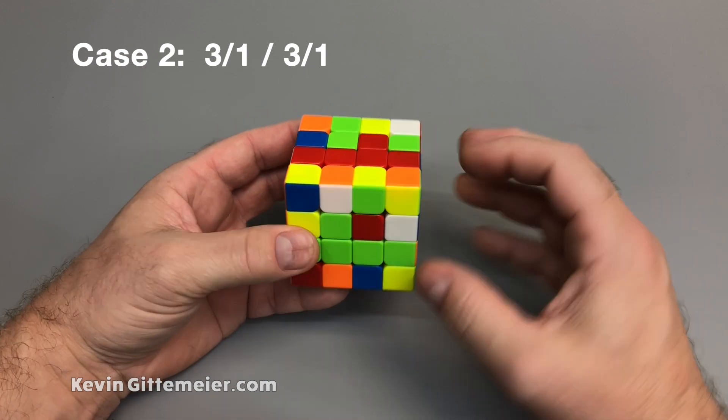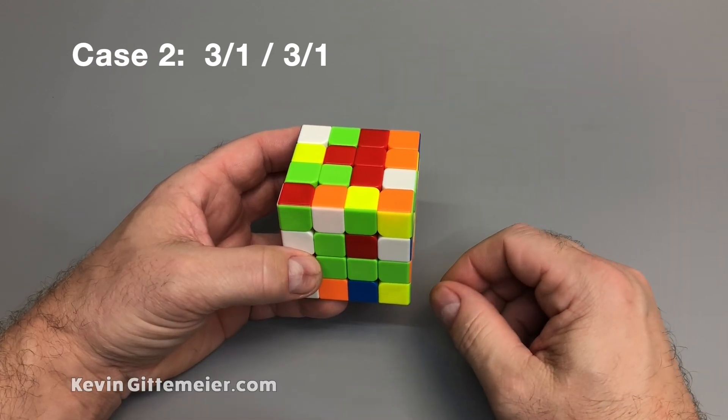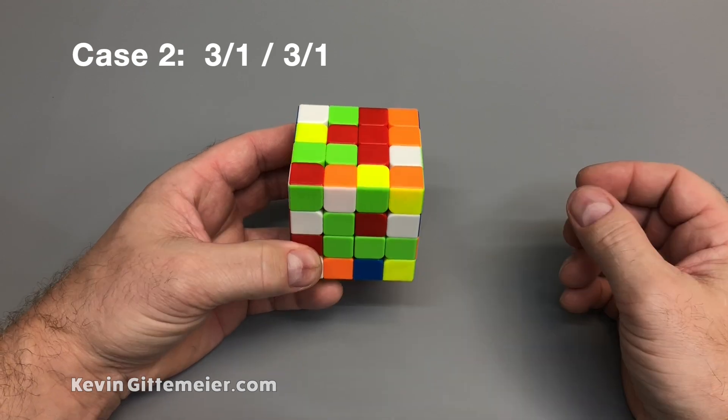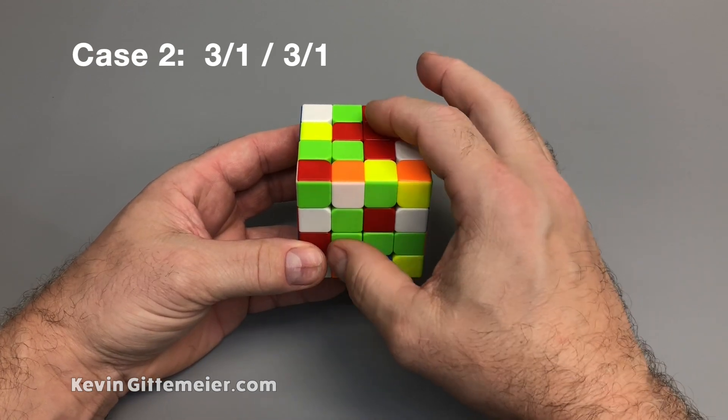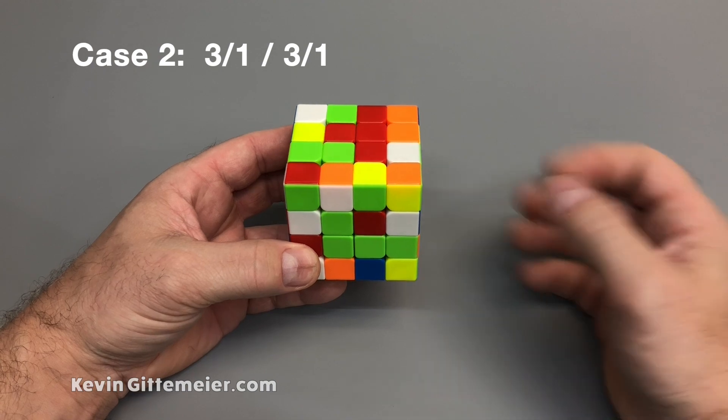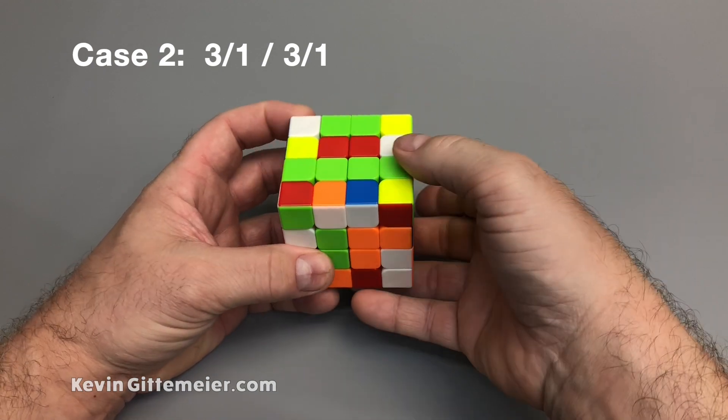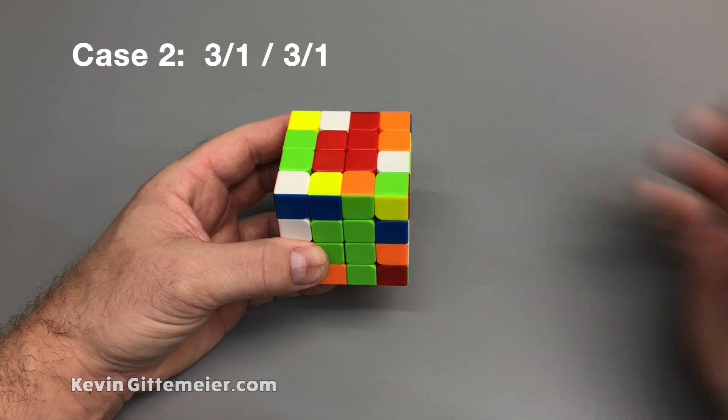Again, we have several different iterations of this, but they're all the same pattern, and we'll solve them with the same principles. What we want to do is put the solved bars in opposite slices and then slice up into a match, and then bring our newly formed bar down.